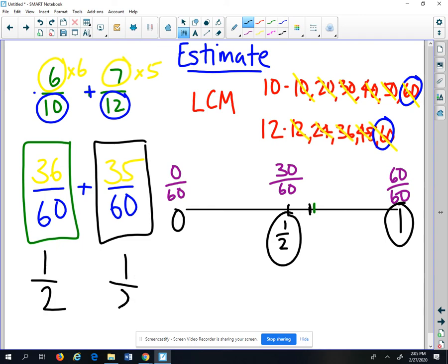And so now I'm going to say to estimate 6 tenths plus 7 twelfths, I'm going to estimate it to be 1 half plus 1 half equals 1 whole. And that is how we estimate adding fractions.